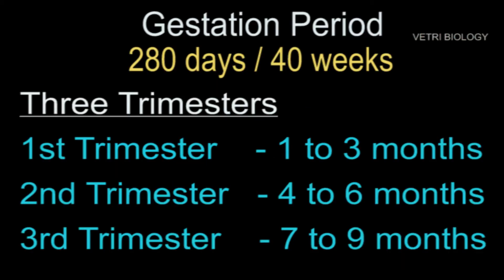Human pregnancy lasts for about 280 days or 40 weeks. This period is called the gestation period. It can be divided into three trimesters of three months each.